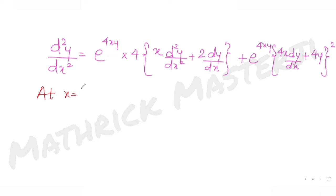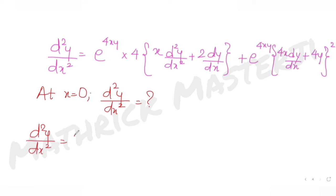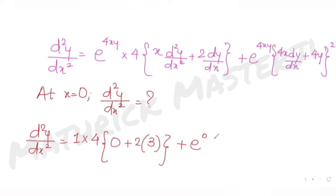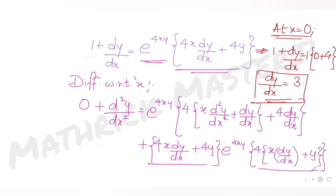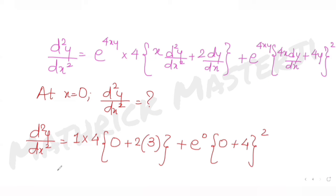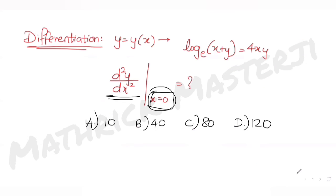Now finding d²y/dx² at x = 0: substituting x = 0, d²y/dx² = e^0 · 4·(0·(d²y/dx²) + 2·3) + e^0·(0 + 4·1)² = 1·4·6 + 1·16 = 24 + 16 = 40.